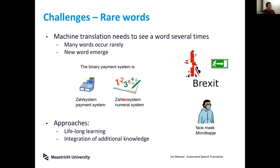These words have very different meanings, but the computer hadn't seen them often enough and mixed them up. Therefore people are looking into lifelong learning or continual learning — continuously improving the system and also integrating additional knowledge so it can learn specific terms.